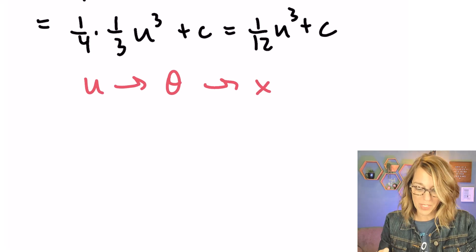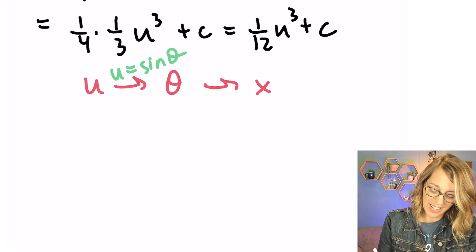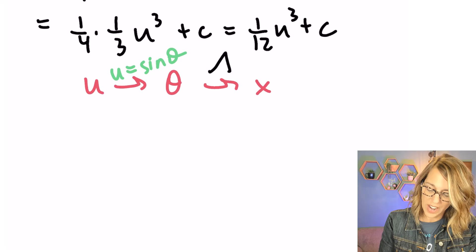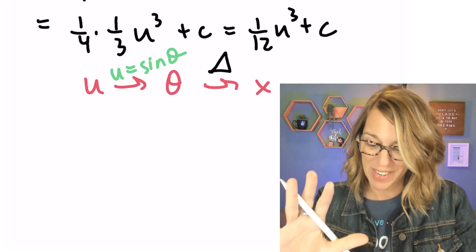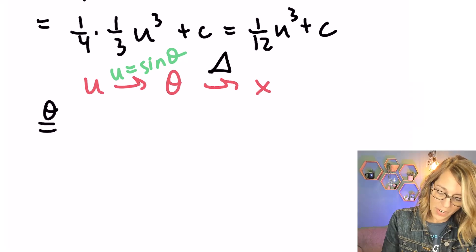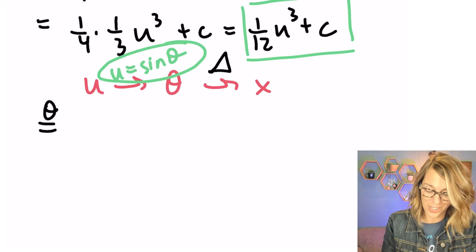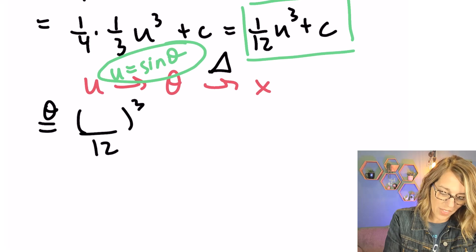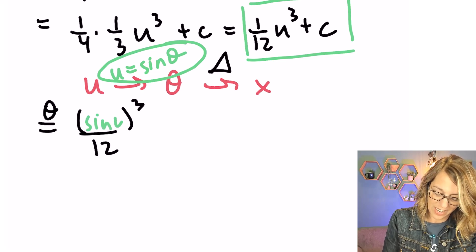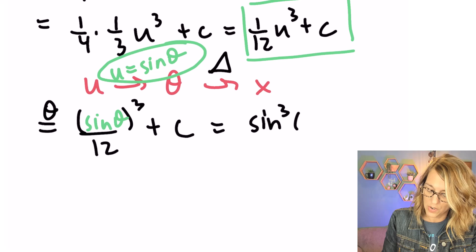To get back to theta, I know that u equals sine theta. So the expression becomes one-twelfth times sine cubed theta plus C. I'll use my substitutions to work back. Replacing u with sine theta gives one twelfth sine cubed theta plus C, which I can write as sine cubed theta divided by 12 plus C.